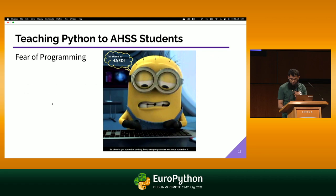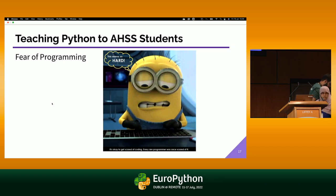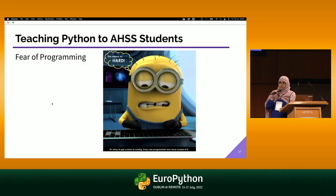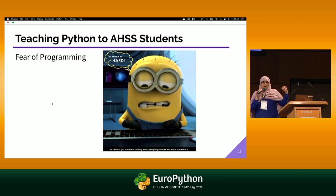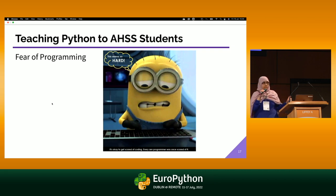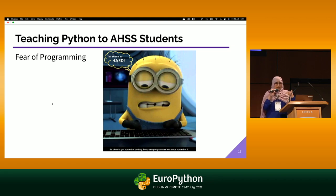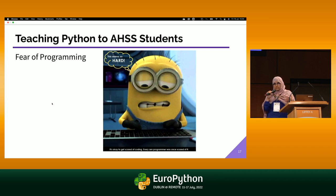My colleague covered what data science is and why social science boundaries are blurring. But when it comes to actually teaching programming and Python to arts, humanities, and social science students, there are quite a few challenges. The topmost is that there is this fear within them. The real issue we face, coming from a computer science background to an AHSS school or AHSS students, is how to make students overcome that fear.